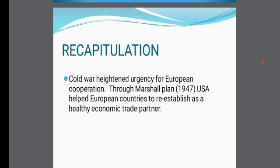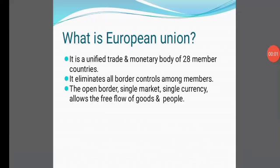The European Economic Union was renamed as European Union on 1st January 1994. European Union is a unified trade and monetary body. It originally had 28 member countries; at present there are 27 member countries, as England has left its membership. It removed all border barriers among members and enabled the countries to have a single market and single currency as a medium of exchange.